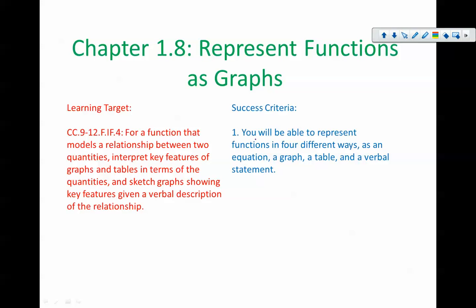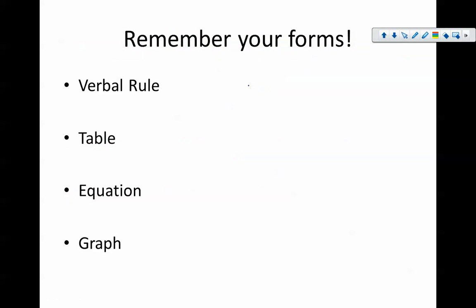As an equation, a graph, a table, and a verbal statement. So, let's just kind of take a quick look at those four things. The verbal rule would be something that is spoken in English. Like, I take a value, multiply by 2, and add 5. Some kind of statement. It could also be a story problem, something with context. All of these constitute a verbal rule.